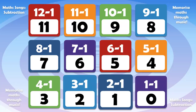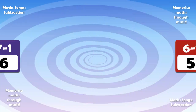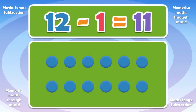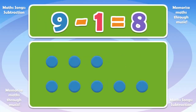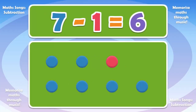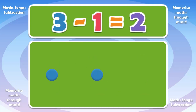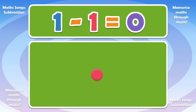Let's try it again. Watch the dots. 12 minus 1 is 11. 9 minus 1 is 8. 7 minus 1 is 6. 6 minus 1 is 5. 3 minus 1 is 2. 1 minus 1 is 0.